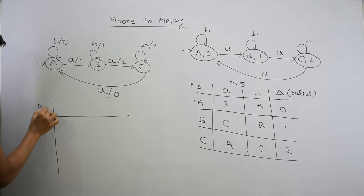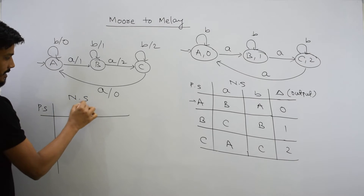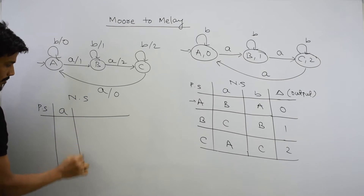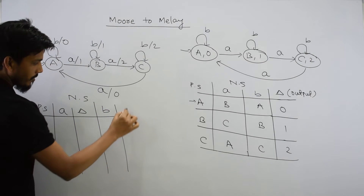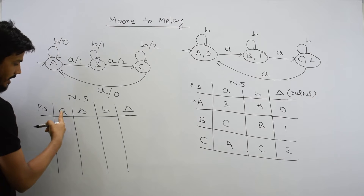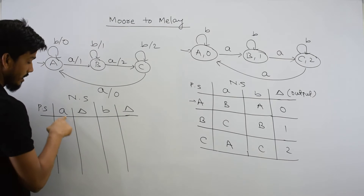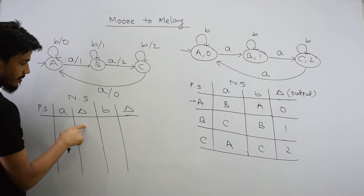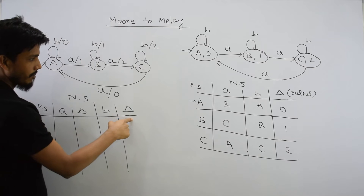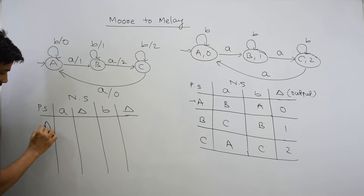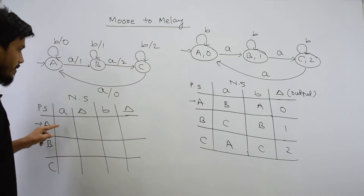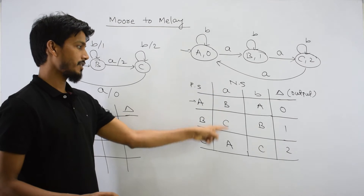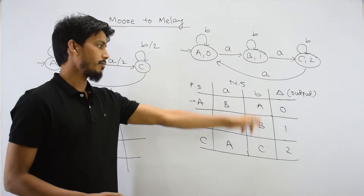We will do a transition table directly. The table has the present state, the next state, input A and its output, and input B and its output. So what will happen with inputs A and B: the next states as they are copied will be B, C, and A for input A, and A, B, C for input B.